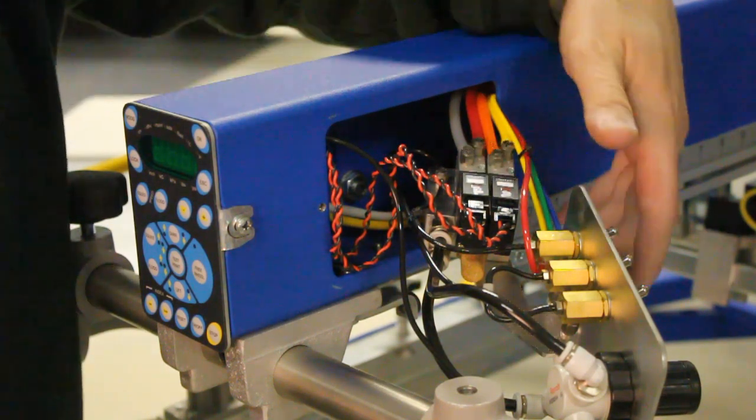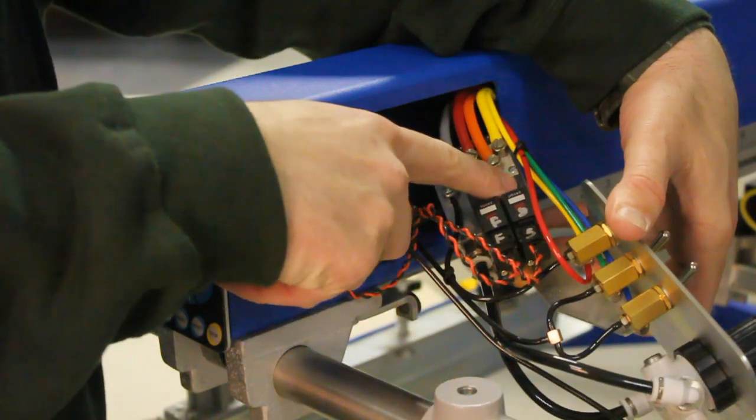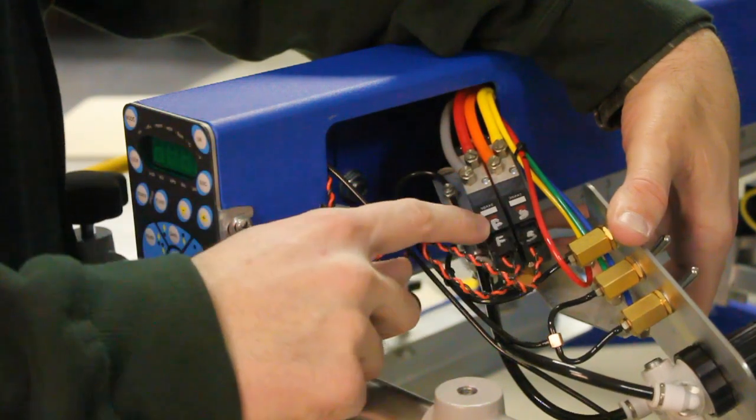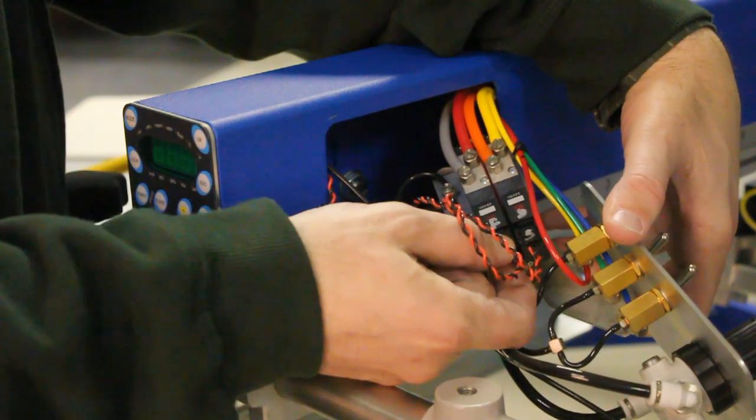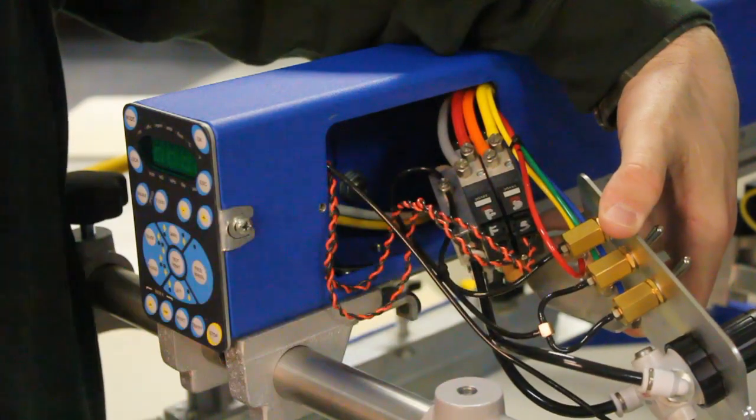There is a manual override here, so if you want to test the valve, you can press this with a small screwdriver. There's LED lights which indicate that the valves are being fired, and all of the valves have quick disconnects. So if you needed to replace one, it's very easy to replace.